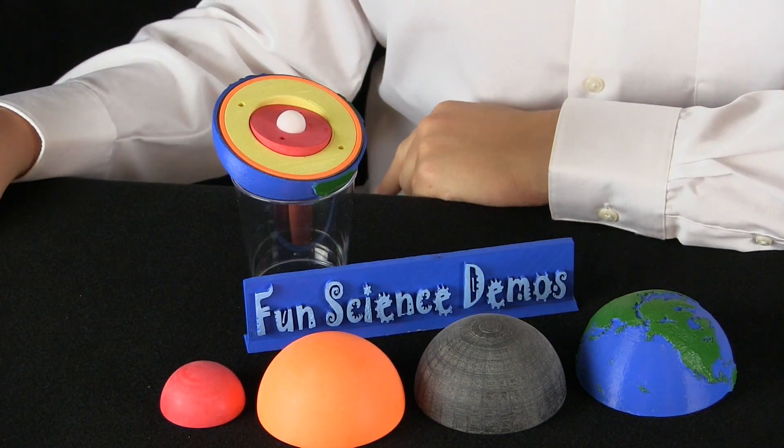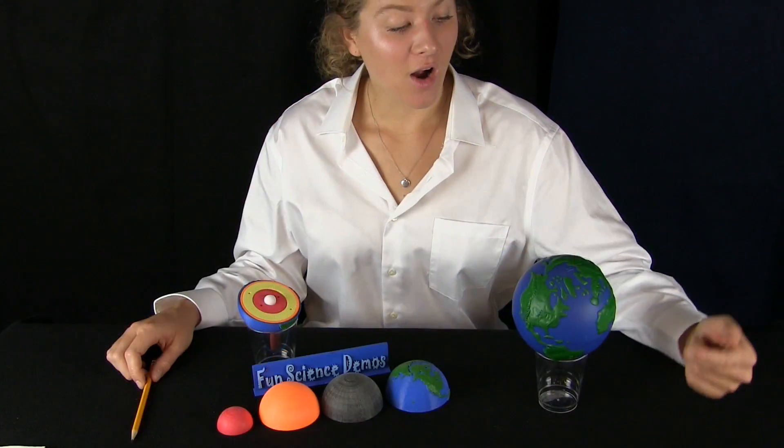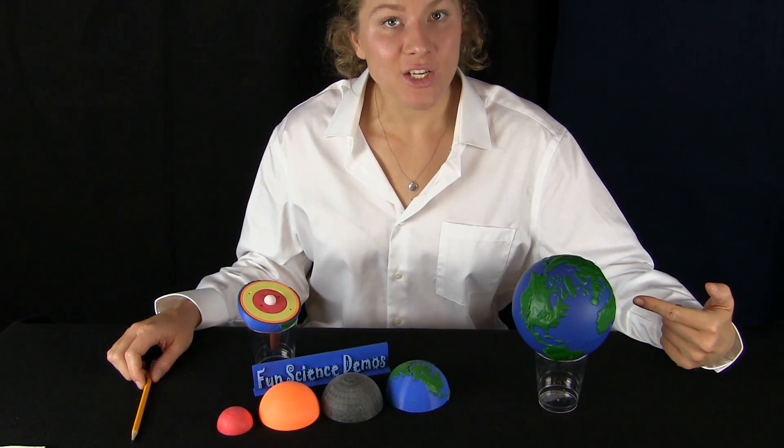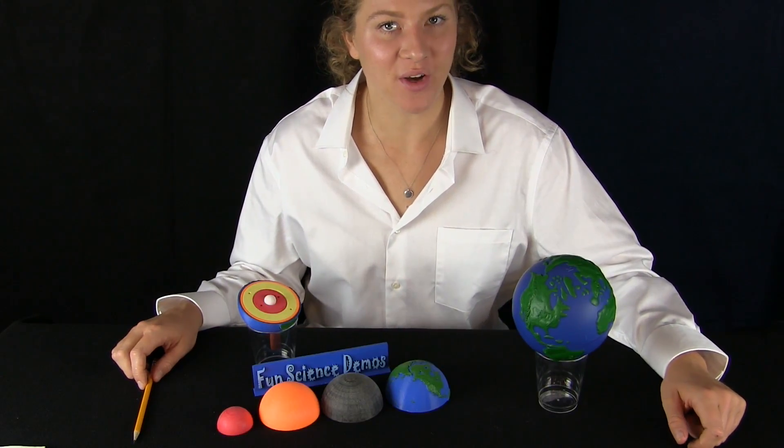That's the inner core. And that's the warmest part of our Earth. Our other model shows each layer, how big it is, and its temperature. Let's zoom in on that so we can take a closer look.